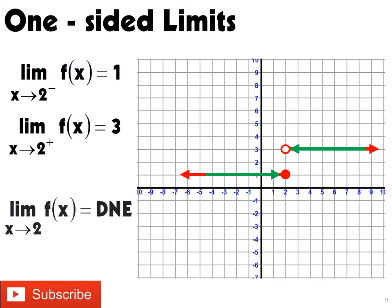Since the left side limit is not equal to the right side limit, we can say that the limit of the function f of x as x approaches 2 does not exist.